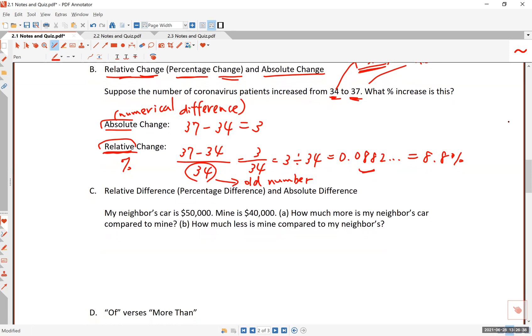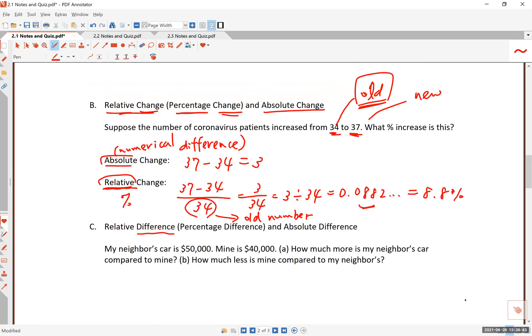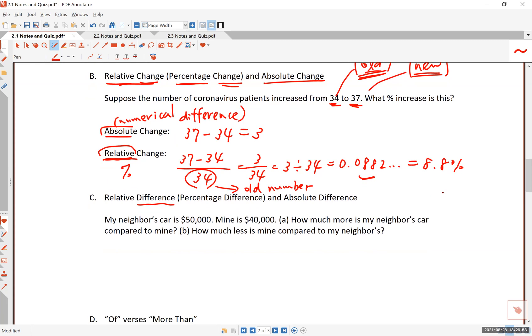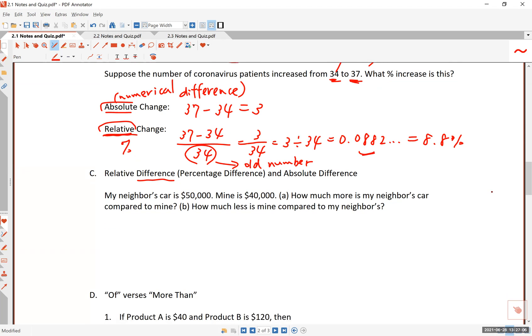The second application is to describe differences. Now, the first one went from old to new. There is a time sequence, right? The time goes from old to the new. For comparing two things at the same time, you don't have the old or the new. So you can use either one of these numbers as the base. And that makes it a little confusing.